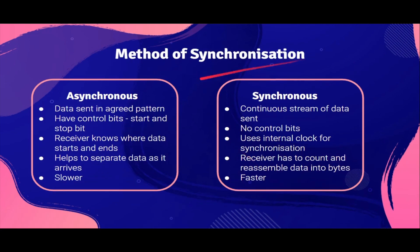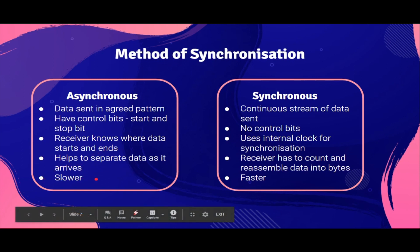Next, method of synchronization. We have asynchronous and synchronous. Asynchronous means data is sent in an agreed pattern with control bits. So if there is a byte of data, the first bit is called a start bit and the last bit is called the stop bit. This ensures that the reader knows where the data starts and ends — it helps them separate data as it arrives. But the use of control bits makes this transmission method slower.